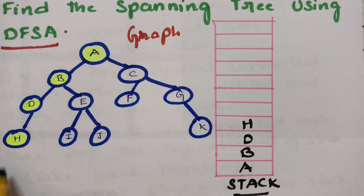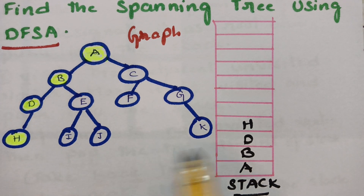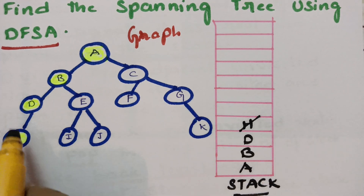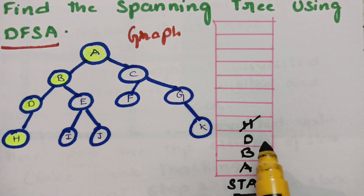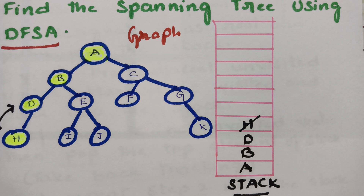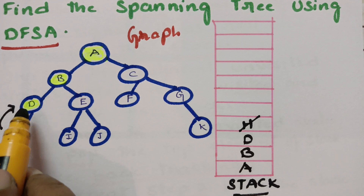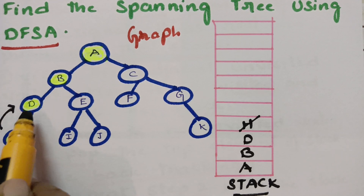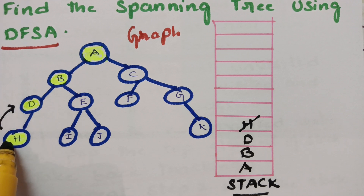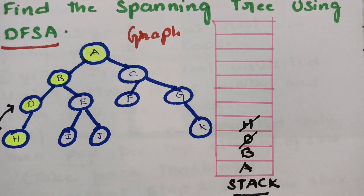From H, there is no way to go deeper into the graph — it is a leaf node. So just pop H and take backtracking. We go to the next top element in the stack, which is D. From D also there is no way to go anywhere; its only adjacent vertex H is already visited. So there is no scope — just pop D as well. The next top element is B, so we take a backtrack to B.